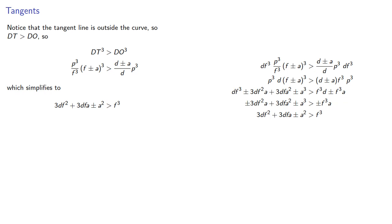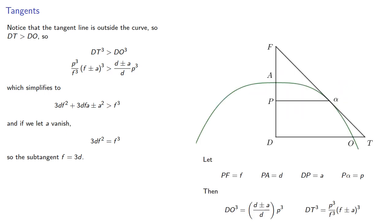And if we let A vanish, in other words we let A be zero, we get so our sub tangent F will be equal to 3D. So going back to our picture, remember our sub tangent is this length here, PF, and Wallace provides a way of finding the point where our tangent line intersects the axis of the curve.